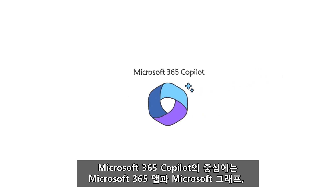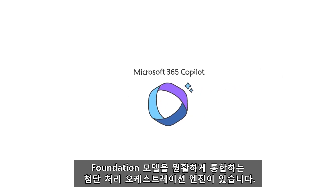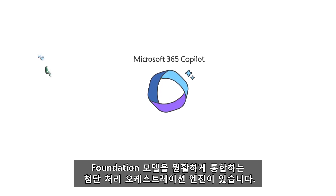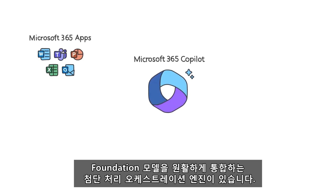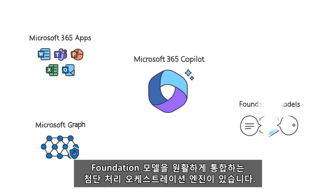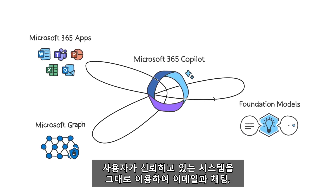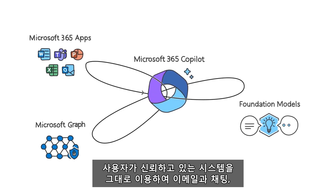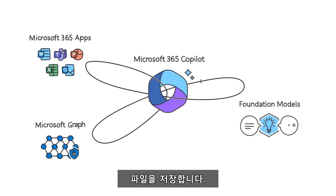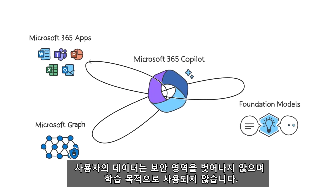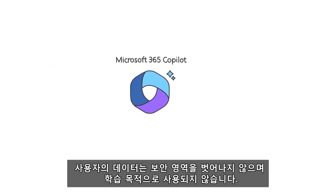At the core of Microsoft 365 Copilot runs an advanced processing and orchestration engine that seamlessly integrates Microsoft 365 apps, the Microsoft Graph, and Foundation models. It's grounded in your data and context, and uses the same system you trust to store your email, chat, and files. Your data always stays with you — it's not used for training purposes.